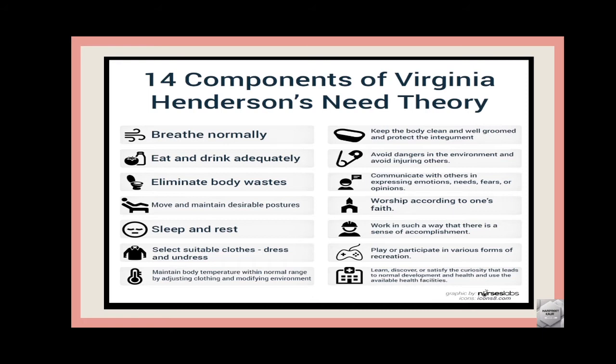Jo healthy individual hai, woh khud se eliminate kar sakta hai apne body waste ko — jaise ki urine woh khud se pass out karta hai without any process of catheterization. Usi tarah woh excreta pass out kar raha hai without kisi enema wagaira ki — jo uske elimination functions hain, woh khud se properly kaam karne chahiye. Ye third need bataya gaya hai. Aage: move and maintain desirable postures.